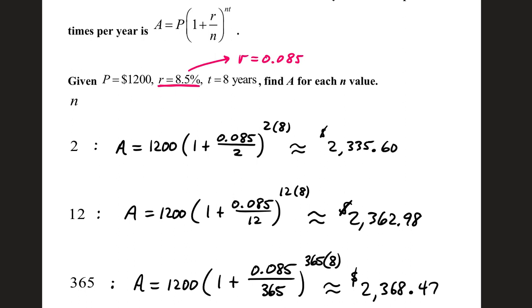When N is 2, the money is compounded twice per year, or every 6 months. A equals 1200 times quantity 1 plus 0.085 divided by 2, raised to the 2 times 8 power.